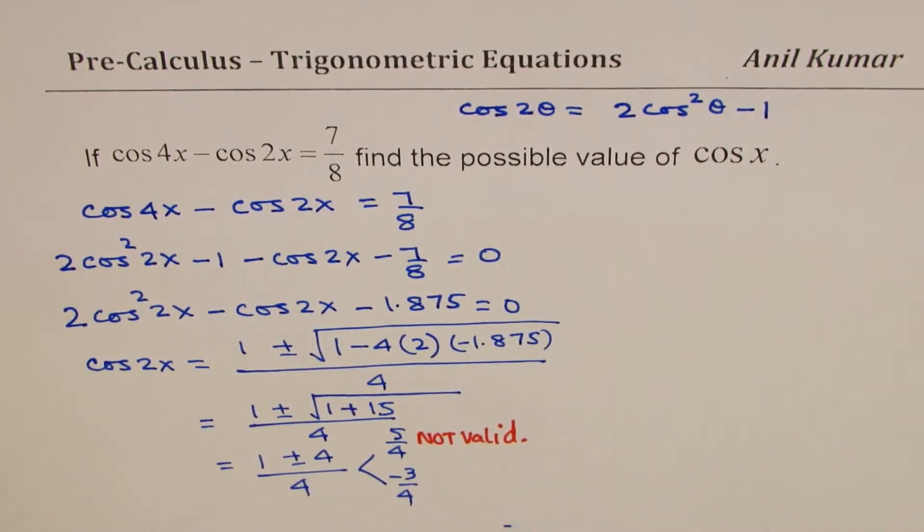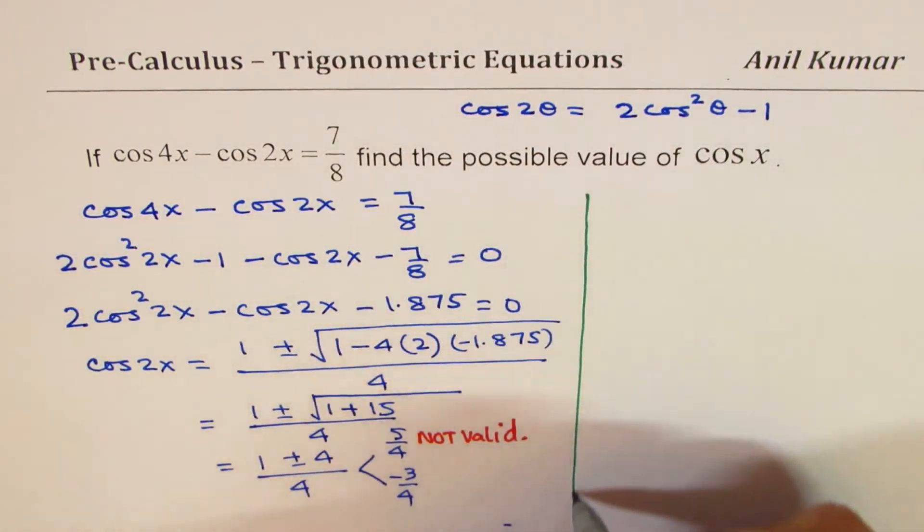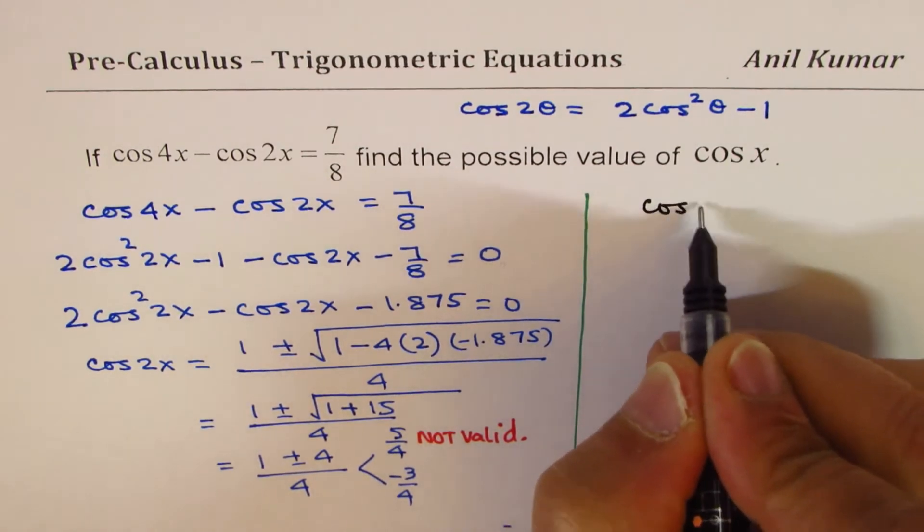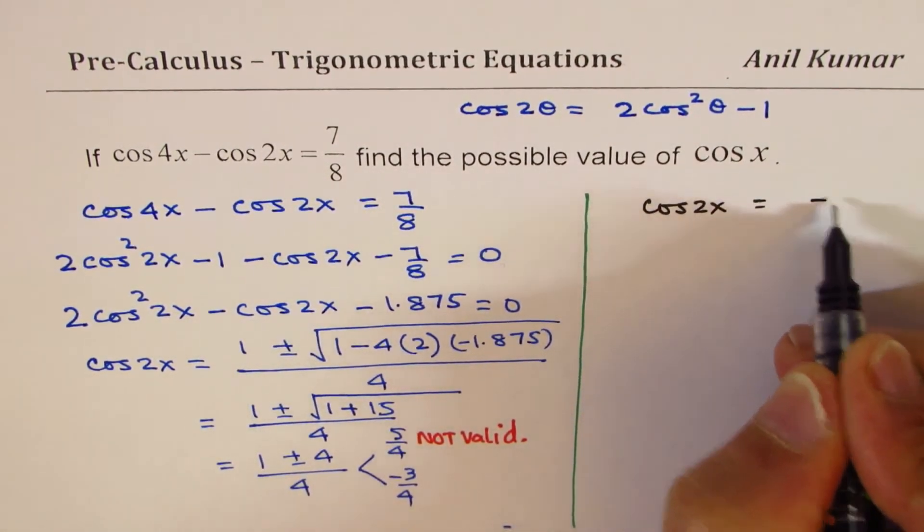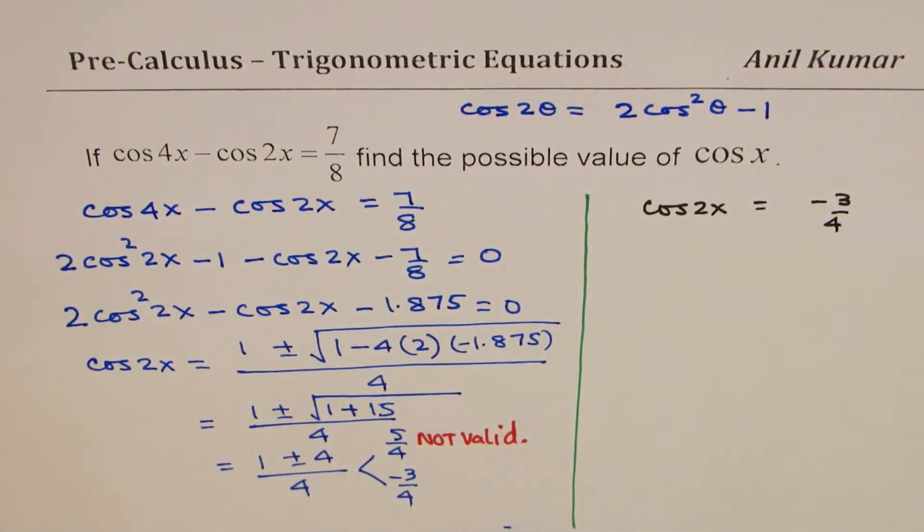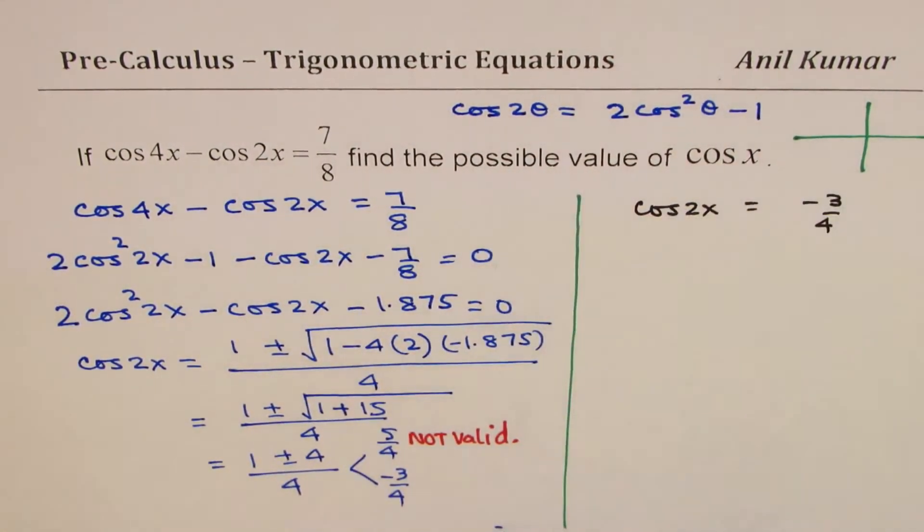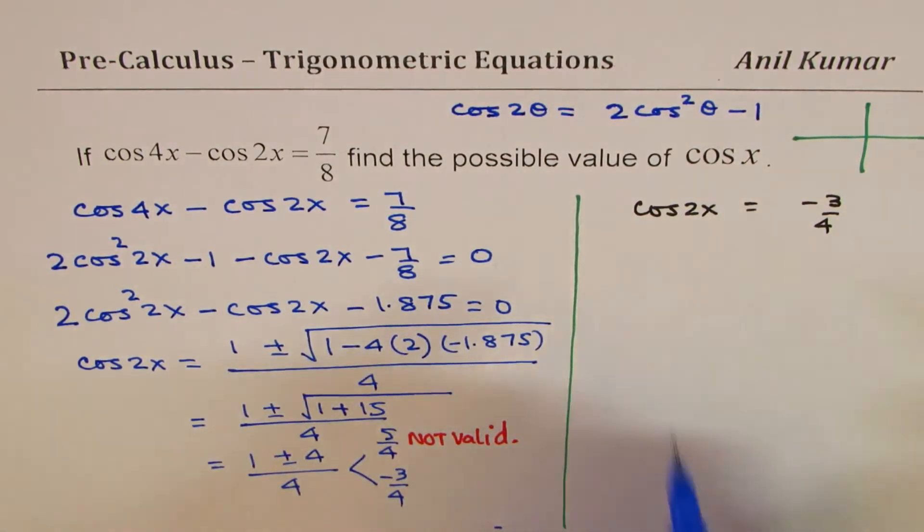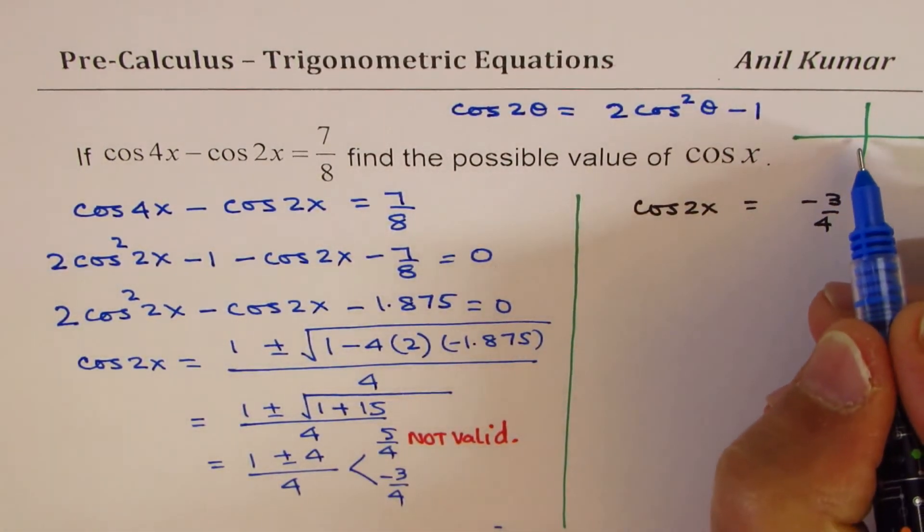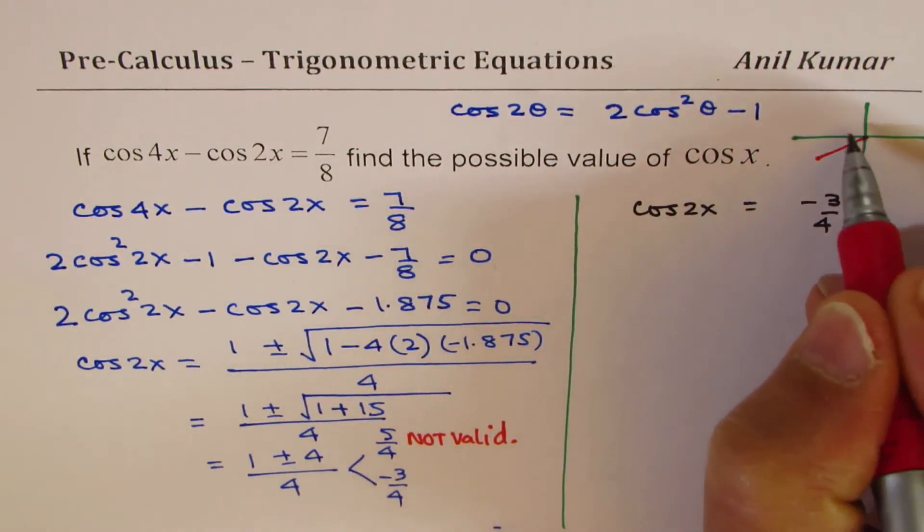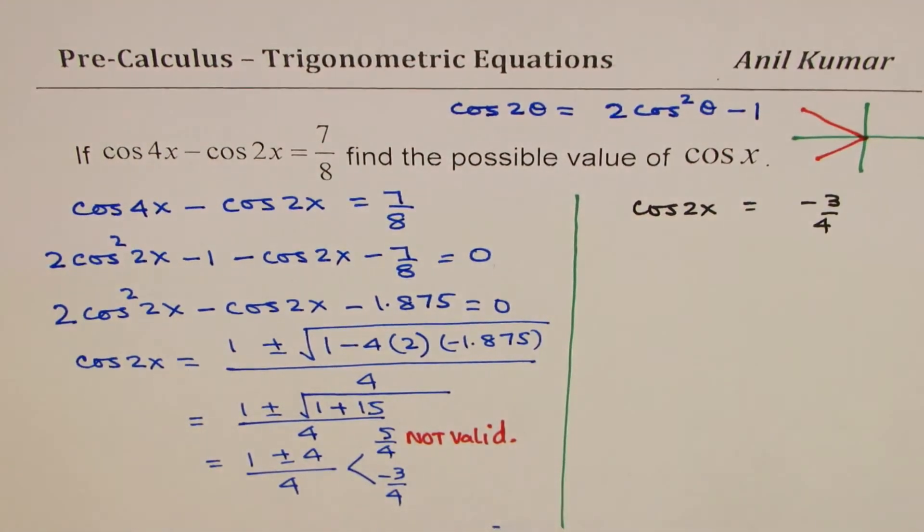Let me take the further solution on the right side of this page. What we have here is cos 2x equals minus 3 over 4. Now, minus 3 over 4 means that we have two possible solutions for 2x - it could be in quadrant 3 or quadrant 2.